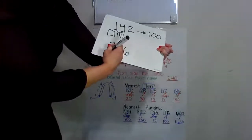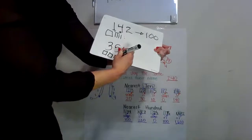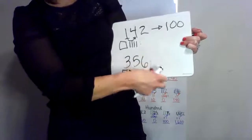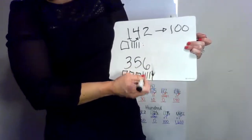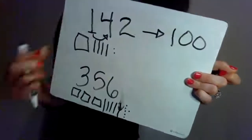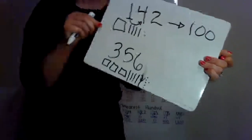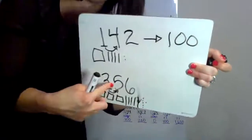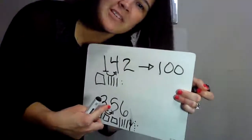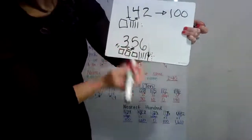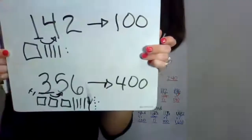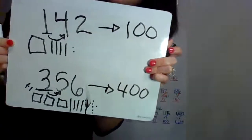356 — I have 3 hundreds, 5 tens, and 6 ones. So we're going to find our place, look next door. Is that five or bigger? Yes. So we're going to add one more. 356 rounds to 400. It rounds up to 400 — it doesn't go down to 300. It's closer to 400.